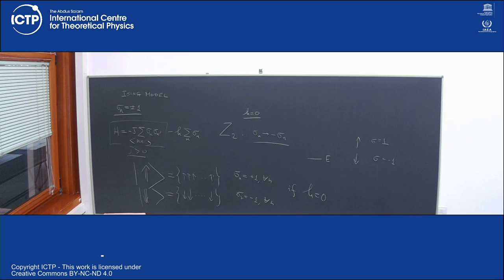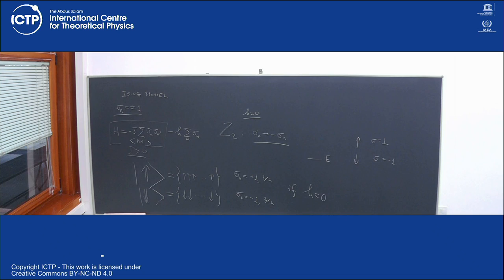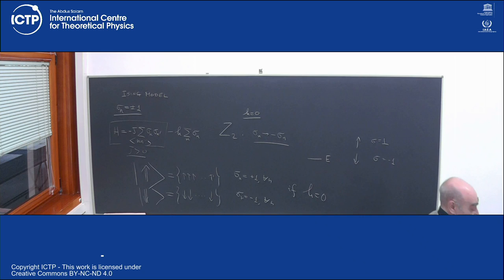We have an example of spontaneously broken symmetry, and it is a discrete symmetry — the simplest symmetry possible. Because of this symmetry, there is always an energy gap between any two different levels, and each energy level is two-fold degenerate. This is what happens when the magnetic field is absent.